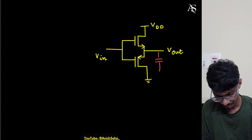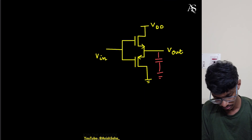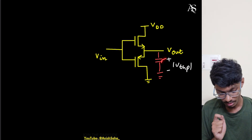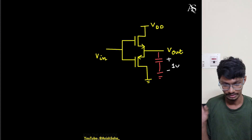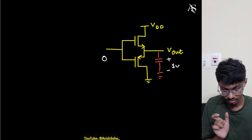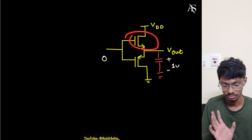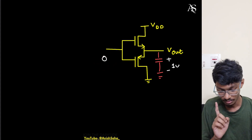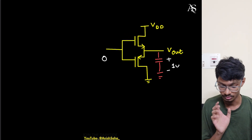The capacitor is already charged to ±|Vthp|. Taking |Vthp| as one volt, as established in the previous video — initially Vin is zero. For the PMOS to turn on, Vsg must be more than one volt (the threshold), so it won't turn on. For the NMOS to turn on, Vgs must be more than one volt, but currently Vgs is minus one, so it won't turn on either. There is no discharging path through the PMOS or charging path through the NMOS, so the output remains constant.